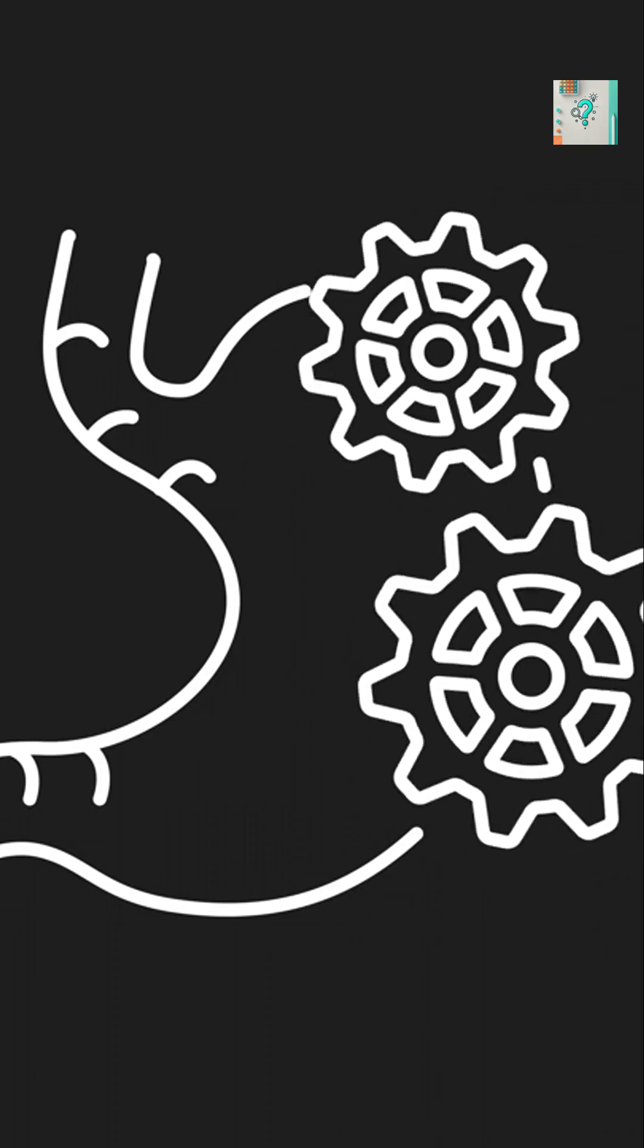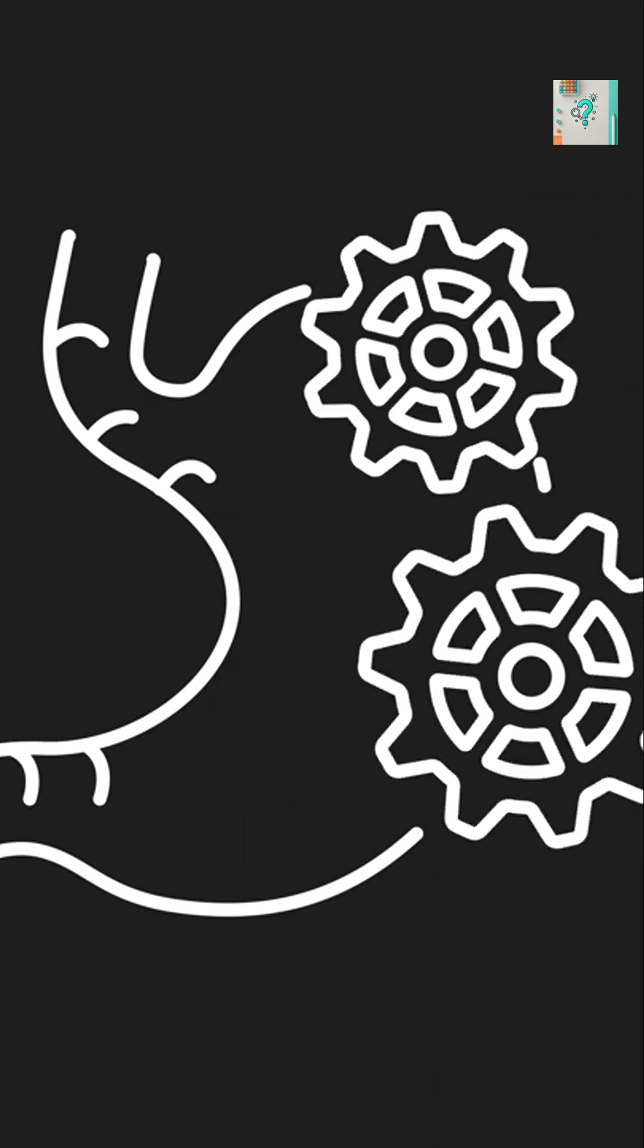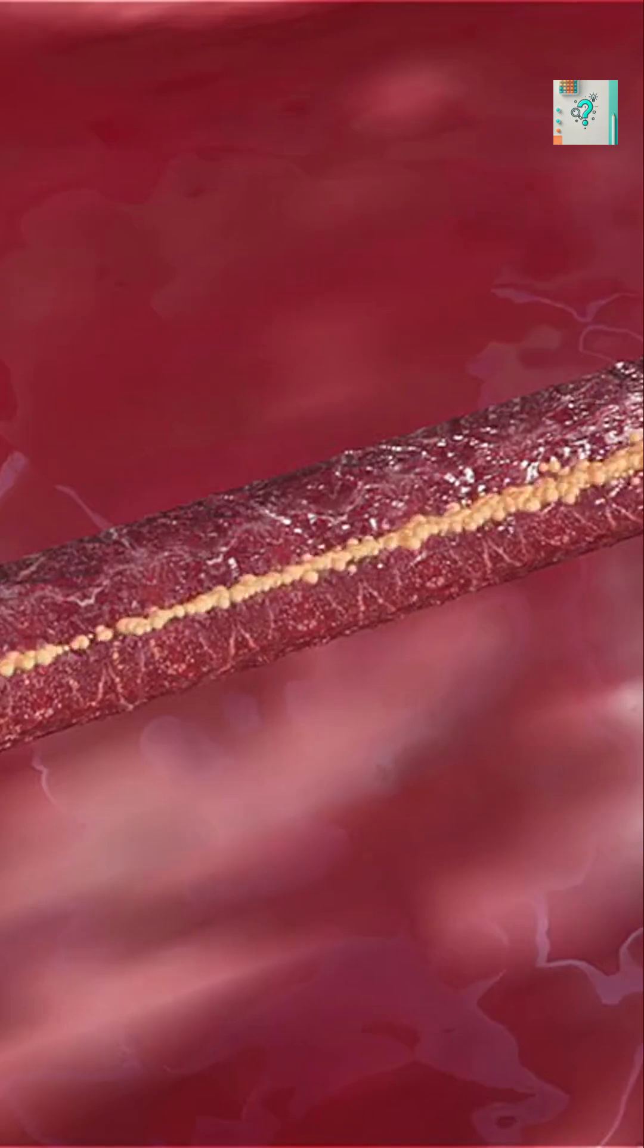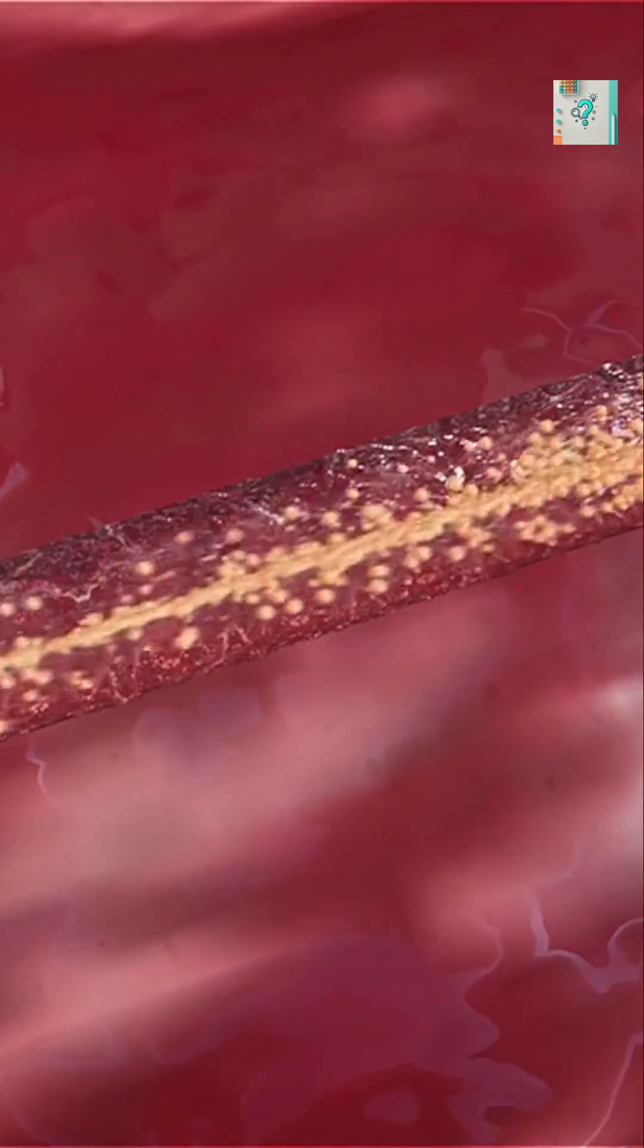When your stomach empties, special cells release a hormone called ghrelin. Ghrelin travels through your bloodstream straight to your brain.